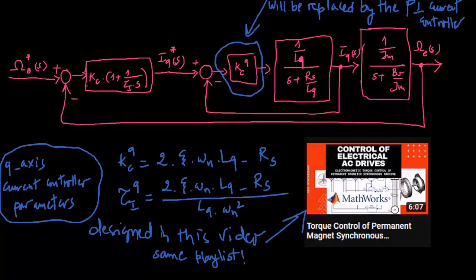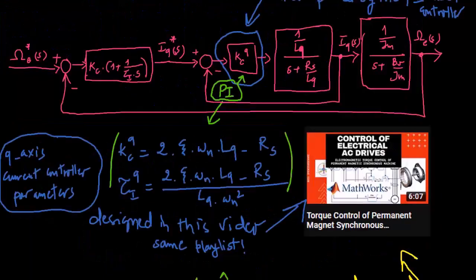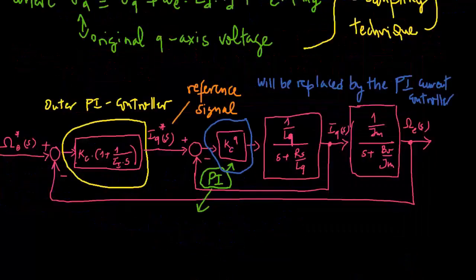In this discussion, we'll primarily focus on designing the speed controller in the outer loop. It's important to note that the dynamic system for the Q-axis current can be represented by a first-order differential equation. To design the outer loop PI controller, we'll examine the closed-loop transfer function between the reference signal and feedback signal.